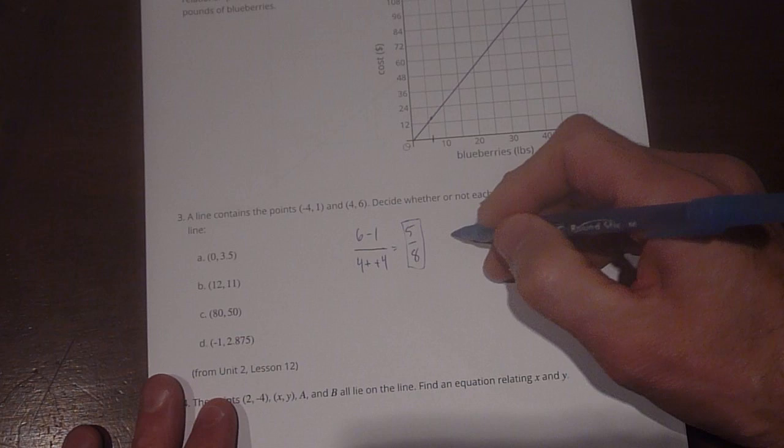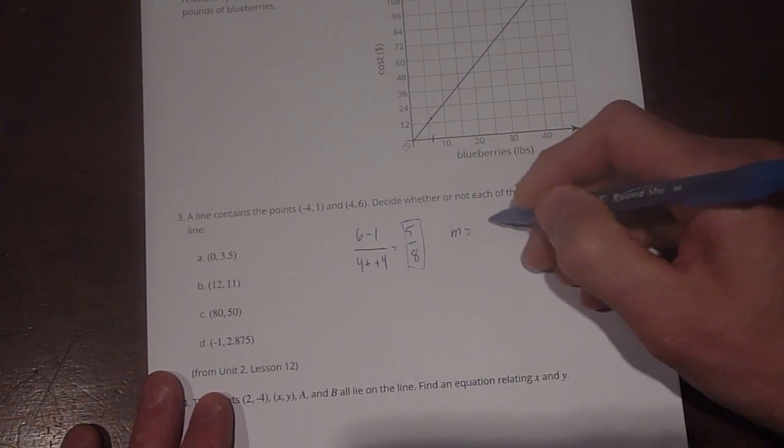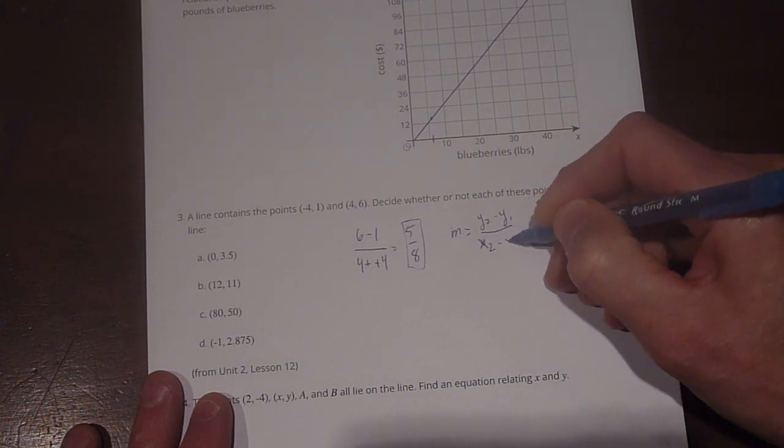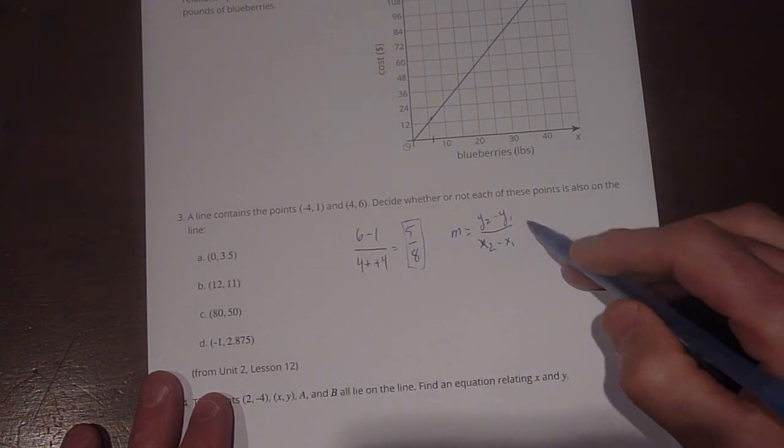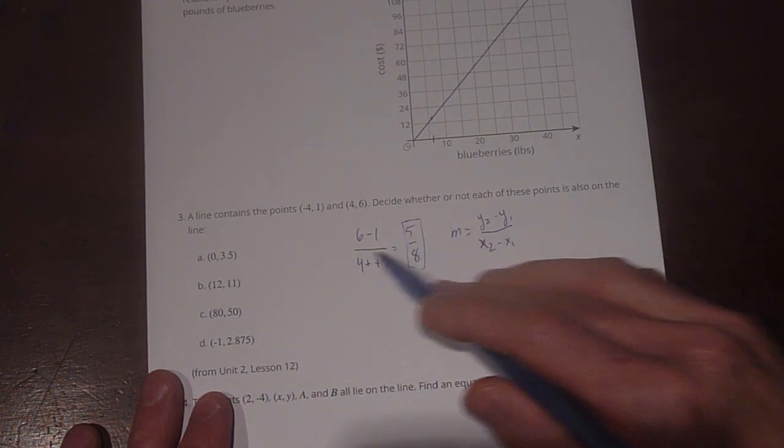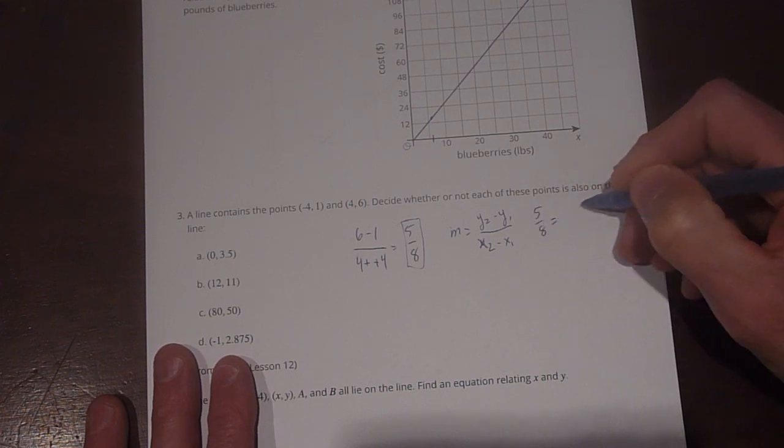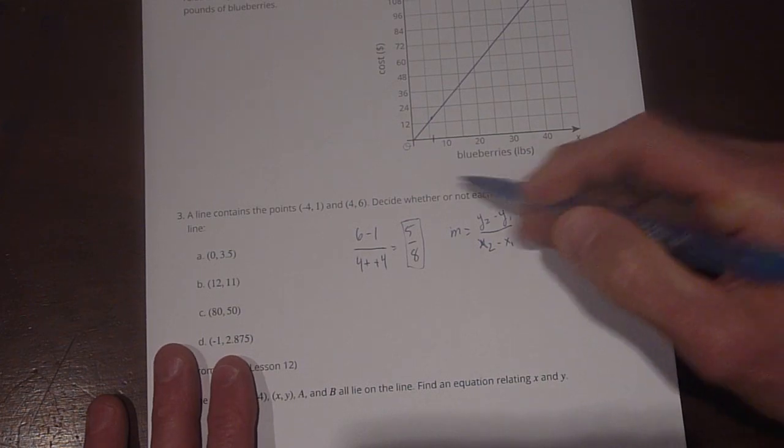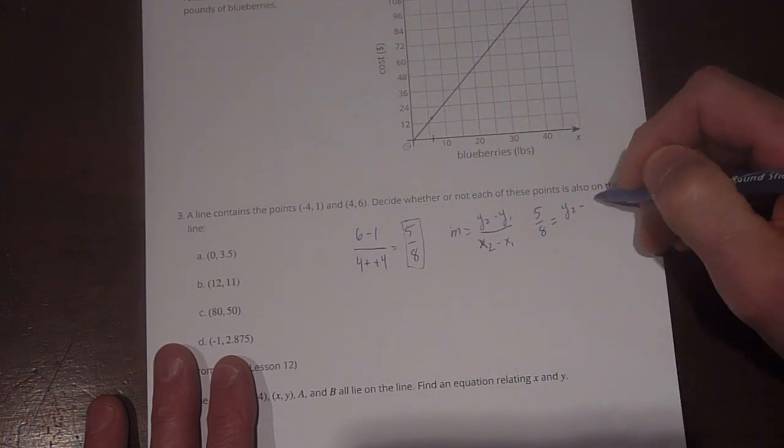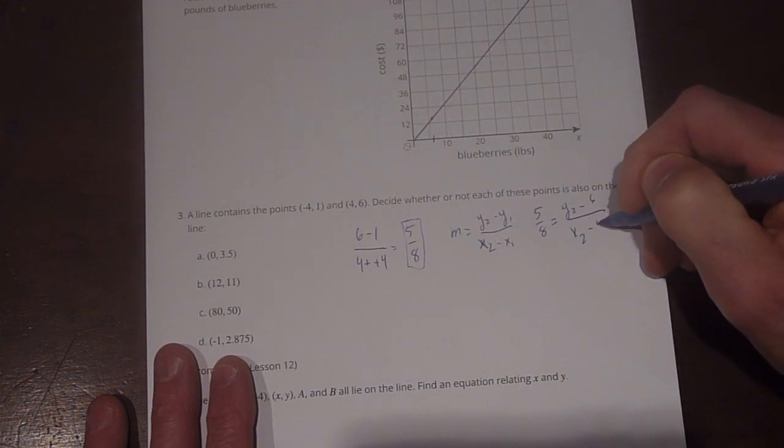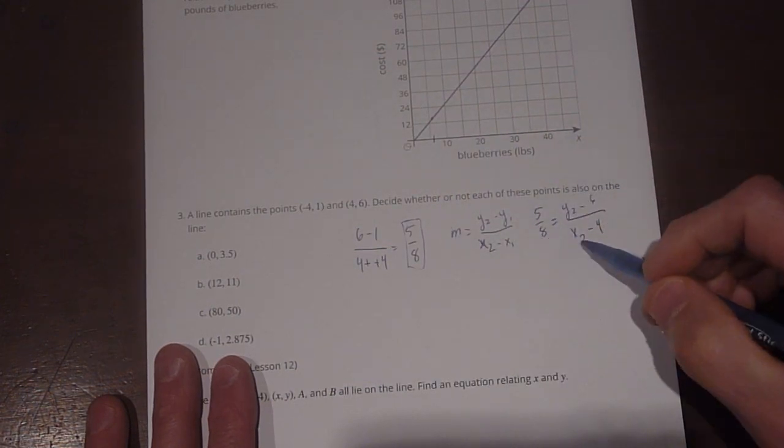Now we need to say that our equation is going to be m equals (y2 - y1) divided by (x2 - x1). So we plug these in into here, and then we figure out whether or not these points are on that line. So our equation is going to be 5/8 equals (y2 - y1), which is, I'll choose 6, divided by (x2 - the corresponding x), 4. So this is going to be our original equation. We're going to plug everything into there.